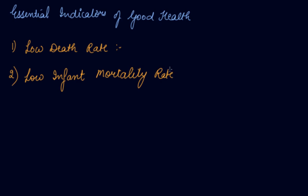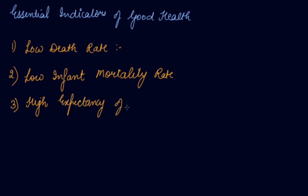Low infant mortality rate is another indicator. Infant mortality rate measures the death of children below the age of one year. If the infant mortality rate is low, it means health facilities and health infrastructure have improved. High life expectancy — that is, the average number of years a human being can live — is also a key indicator.